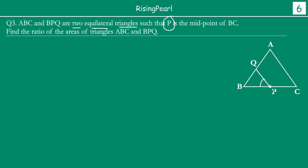BPQ is an equilateral triangle because angle B is 60 degrees, this angle is 60 degrees, so the third angle automatically becomes 60 degrees as well. Note that Q could also be drawn outside the triangle ABC — both scenarios need to be considered as we solve the question. The question asks us to find the ratio of areas of triangle ABC to triangle BPQ.